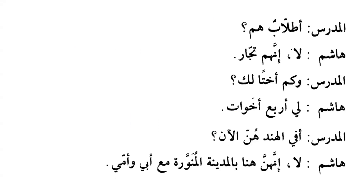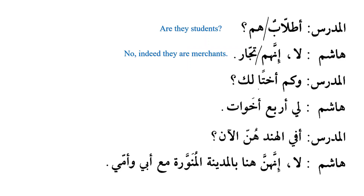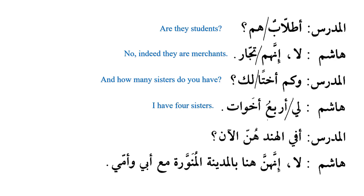Teacher: Atibbau hum — are the students... a very simple nominal sentence where hum is mubtadaun and tibbau is khabarun. Generally, a definite noun is subject and an indefinite noun is predicate. Hashim: La, innahum tujjarun — no, indeed they are merchants! Teacher: Wa kam ukhtan laka ya Hashim — and how many sisters do you have, Hashim? Hashim: Li arba'u akhawatin — I have four sisters. Note: ukhtnun is feminine but the number arba' is masculine because numbers 3–10 are opposite in gender.